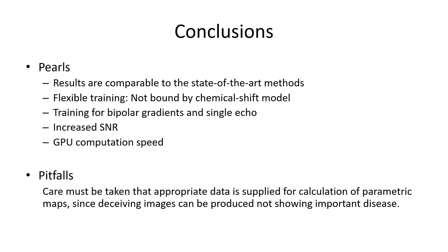Comparing deep learning results with 12 complex images to the graph cut method yields excellent correlation with fat fraction, R2 star, and off-resonance. Several pearls and pitfalls were identified: deep learning results can be comparable to state-of-the-art water-fat separation methods, and deep learning allows flexible training not bound by a chemical shift model. All images were from bipolar gradient acquisitions — something difficult for conventional methods — a small increase in SNR was realized, and computation speed is fast. Most importantly, a pitfall was identified: when using deep learning for water-fat separation, care must be taken that appropriate data is supplied for calculation of parametric maps, since deceiving images can be produced that do not show important disease.